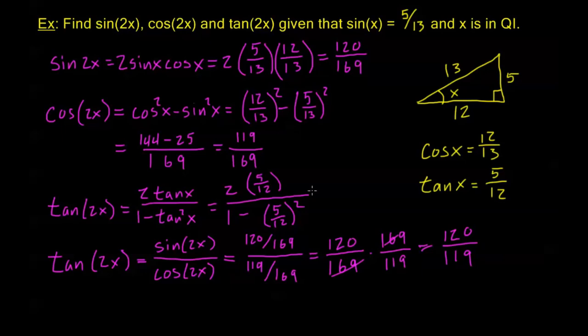This is the same answer we'll get from doing it the other way, from continuing on from the tangent formula. This is just a bit more tedious. We need to get a common denominator in the denominator of 144, and after all that work, we're going to end up right here anyway. So this is just a quicker way to do it.